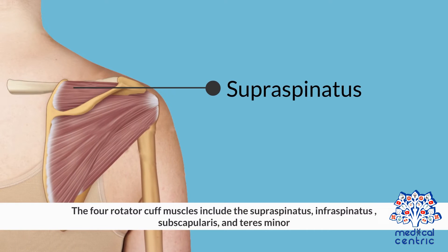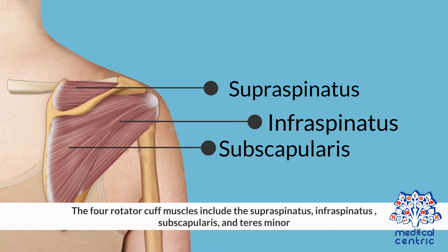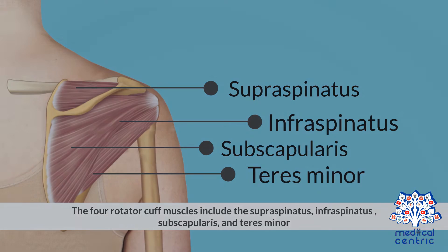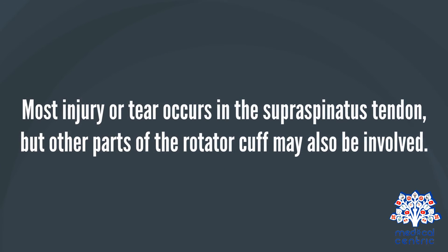The four rotator cuff muscles include the supraspinatus, infraspinatus, subscapularis, and teres minor. Most injury or tear occurs in the supraspinatus tendon, but other parts of the rotator cuff may also be involved.